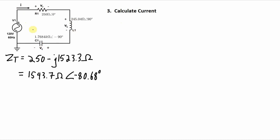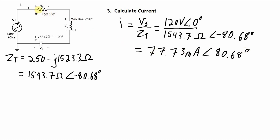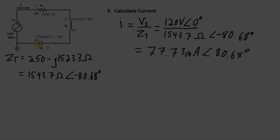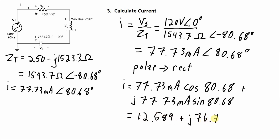The next thing to do is to calculate the total current. Since this is a series circuit, the current is the same through all of the devices, and will be equal to the source voltage divided by the total impedance. The voltage from the source is 120 volts, used as our zero-degree phase shift reference. We divide the magnitudes and subtract the phase angles, giving 77.73 milliamps with a phase angle of 0 minus −80.68, so 80.68 degrees. That current goes through the resistor, through the inductor, and through the capacitor. Converting to rectangular coordinates, we get 12.589 + j76.708 milliamps.